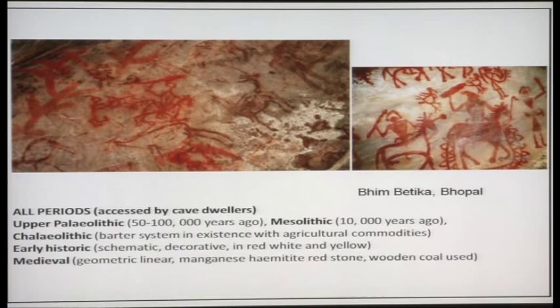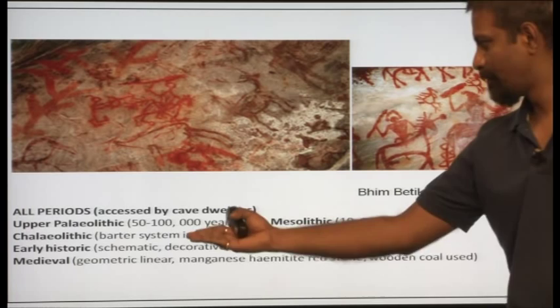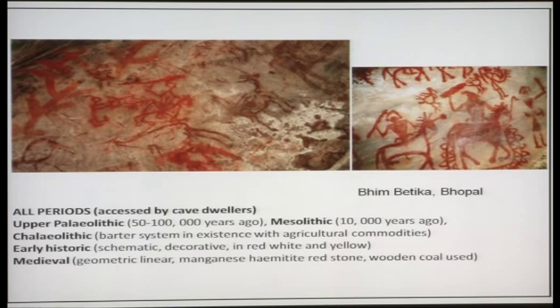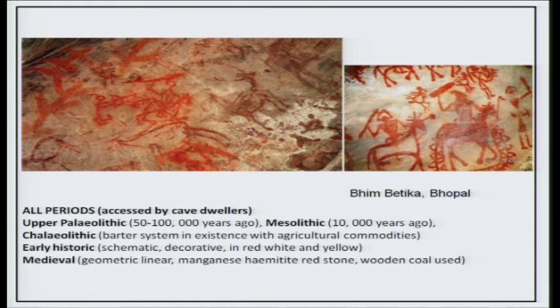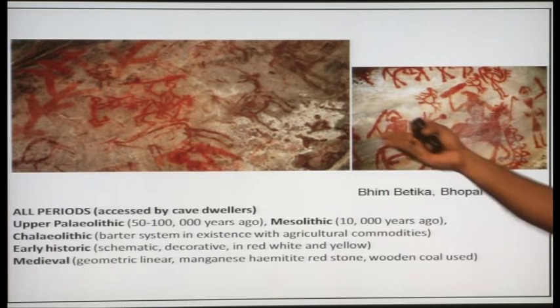So this stage here is about fifty to about a hundred thousand years ago, Mesolithic stage is about ten thousand years ago. If you look at these figures, you would realize that people started sketching or painting schematic decorative in red, white and yellow and medieval stage was what is depicted by geometric linear. These are paintings from a long time ago and if you look at these paintings, you would realize that there is no text, there is no grammar, there is no language, just art and pure art nothing else.